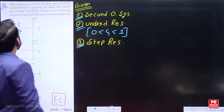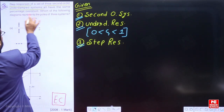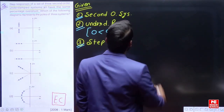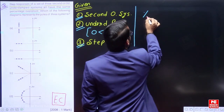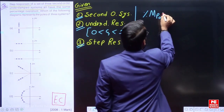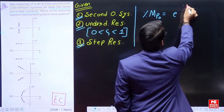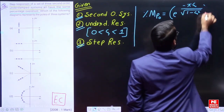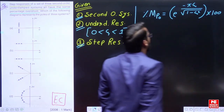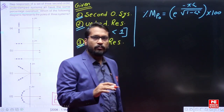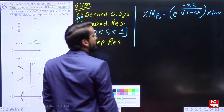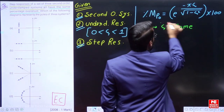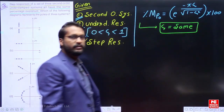All three systems have the same percentage overshoot. This information is very important. The formula for percentage overshoot is: e^(−π·ζ / √(1 − ζ²)) × 100. It means if the percentage overshoot for all three systems is the same, then definitely their corresponding zeta value will also be the same.